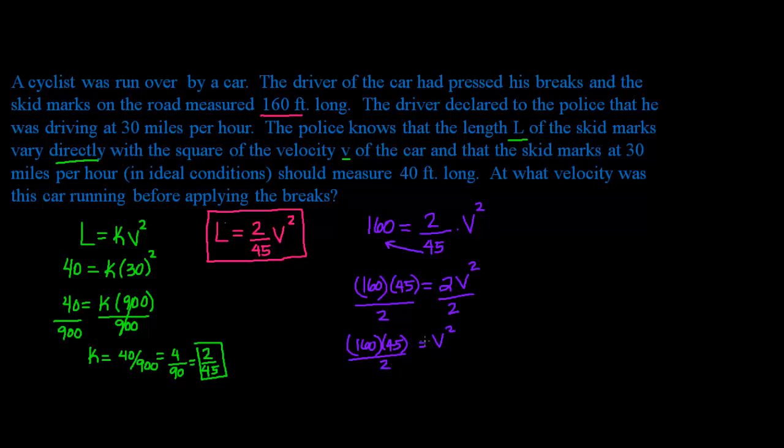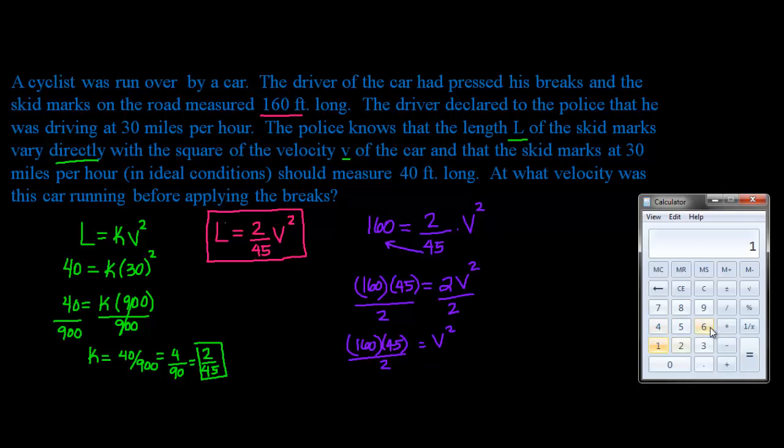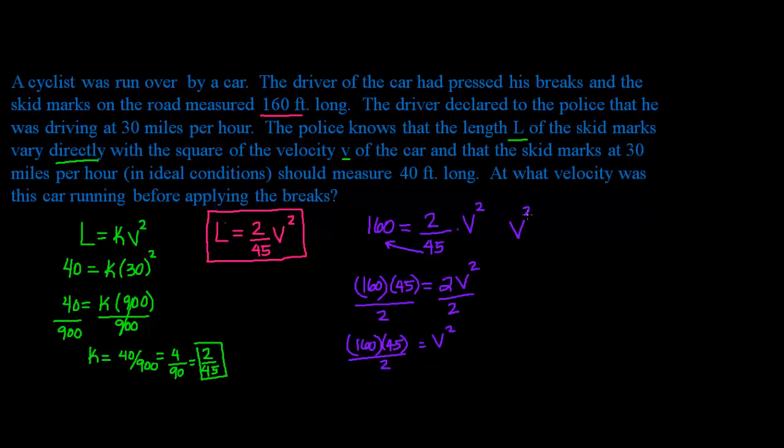Now, I want V, I don't want V squared, so I have to take square root both sides. So I'm going to calculate how much this is. Let's get our calculator, 160 times 45 equals, and then we divide by 2, and you get 3,600. So you get that V squared is equal to 3,600. And if we take square root both sides, we get that V is equal to 60 miles per hour.